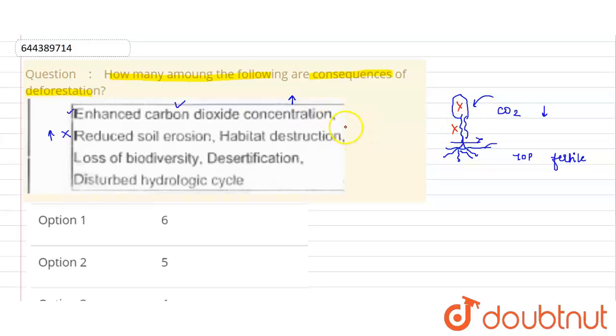Okay, so there will be loss and destruction of the habitat. This is true. Loss of biodiversity. Loss of habitat will result in loss of biodiversity. Desertification. Now this land will get converted into desert after a long period of soil erosion.